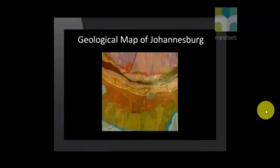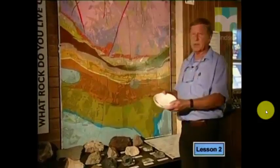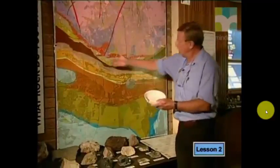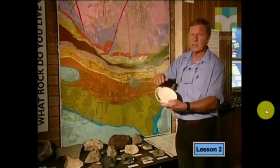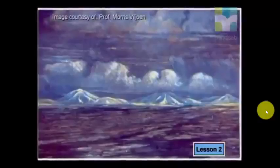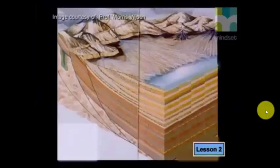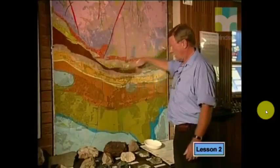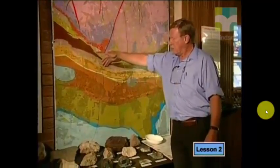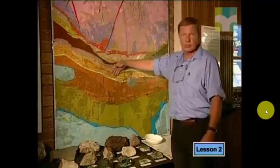Now we know why gold is so valuable, but where did it come from? Professor Terence McCarthy will tell us how gold came to be in this area. This is a geological map of Johannesburg, and each color represents a layer of a different kind of rock. These layers are arranged like a bowl — we call it a basin. The edges of the basin are like bowls, one inside the other, getting smaller and smaller.